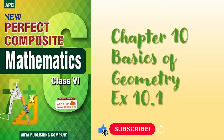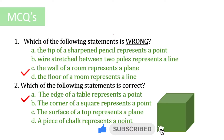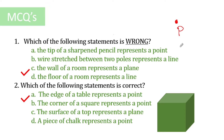Let's start with the MCQs. The first question asks which of the following statements is wrong — so they are asking for the incorrect statement. The first statement says the tip of a sharpened pencil represents a point. A point is basically just a dot, and in mathematics we represent it with a capital letter, like P. So yes, the tip of a sharpened pencil does represent a point, but this is not the wrong statement.